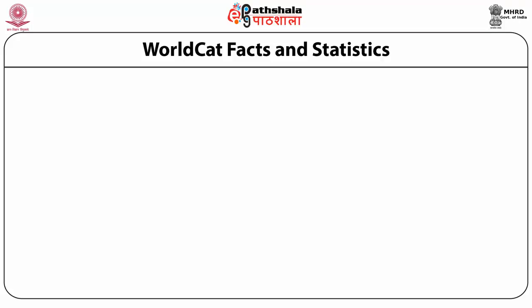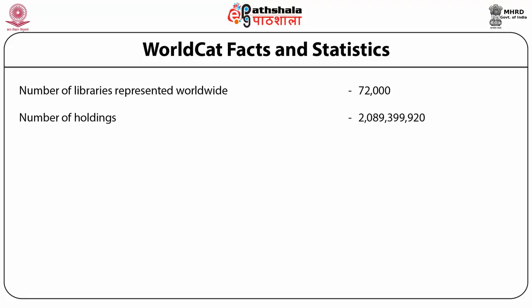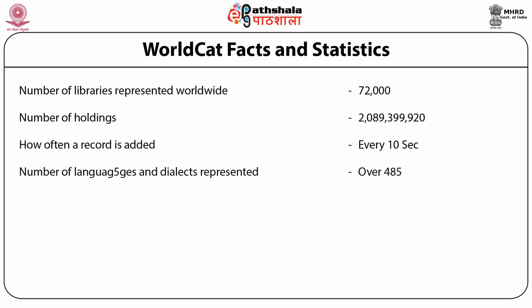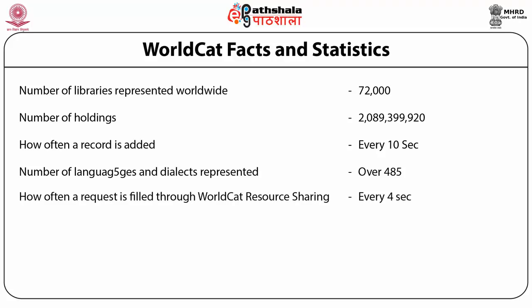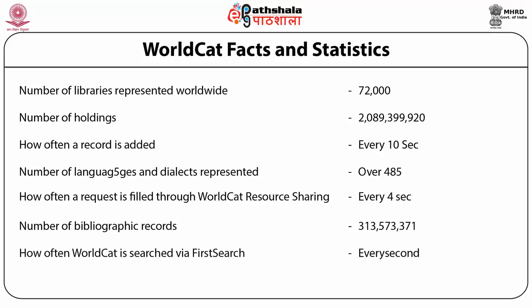Regarding WorldCat facts and statistics: the number of libraries represented worldwide in WorldCat is 72,000, with holdings of over 2,089 million. Every second, one record is added to the catalogue, which contains more than 486 languages. Every 4 seconds, a resource is shared. WorldCat holds over 3,135 million bibliographic records, and every second a record is searched, with more than 172 countries represented.